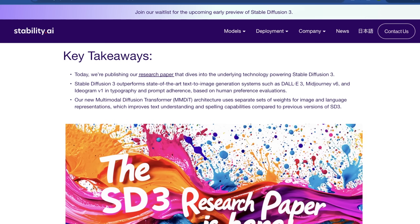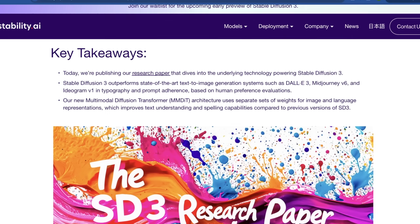Basically they're saying Stable Diffusion 3 outperforms state-of-the-art text-to-image generation systems such as DALL-E 3, Midjourney v6, and Ideogram v1 in typography and prompt adherence based on human preference evaluations. The reason Midjourney v6 is sometimes annoying to use is because it vastly prioritizes human preferences — basically what it knows humans like to look at. What I've always thought Stable Diffusion really excelled at was prompt adherence: being hyper-specific with what you want and being able to tune very small portions of what you're working with, even before you get to things like inpainting or outpainting.